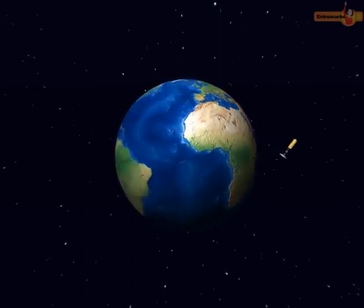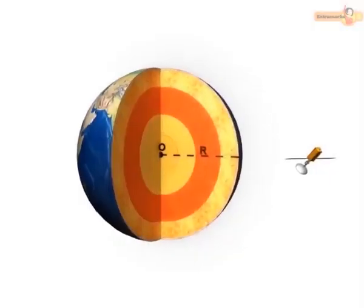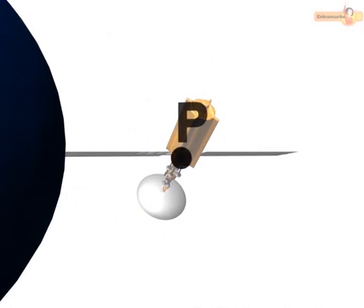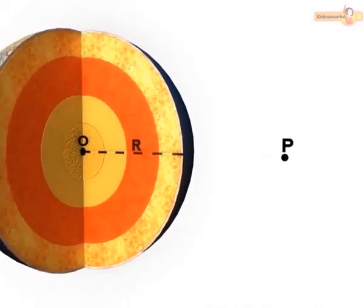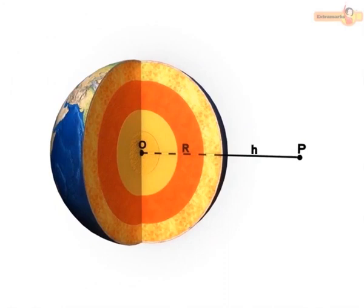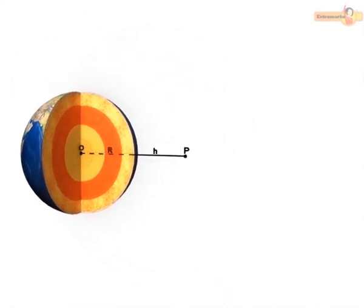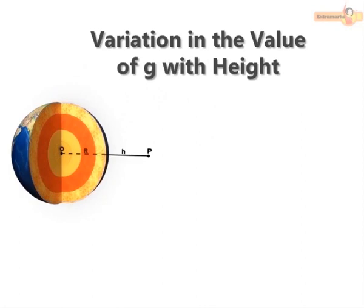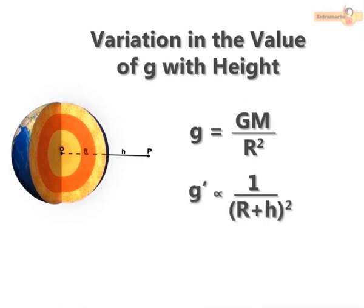Variation in the value of G with height. Consider a point P at a height H above the earth's surface. The value of acceleration due to gravity G' at point P is less than that at the surface of the earth. It is because the effective radius for this point becomes R plus H. Hence, with an increase in height, the value of G decreases.